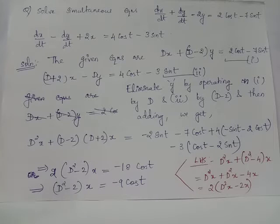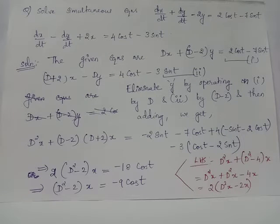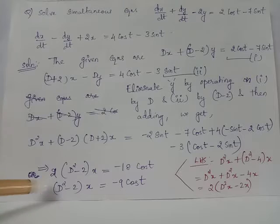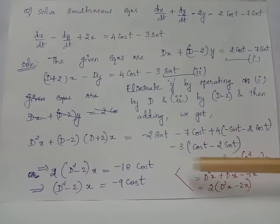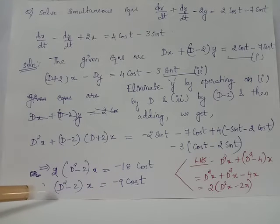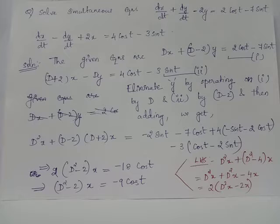We rewrite (D - 2)(D + 2) as D² - 4, using the identity (a - b)(a + b) = a² - b². The LHS becomes D²x + D²x - 4x = 2D²x - 4x. Dividing both sides by 2 gives the differential equation (D² - 2)x = -9cos(t).